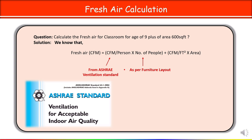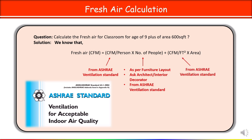If furniture layout is not given, the next option is to ask the architect, interior decorator, or client how many people to consider. If you are not getting a response from there either, the last option is to use the ASHRAE ventilation standard to calculate the number of people.